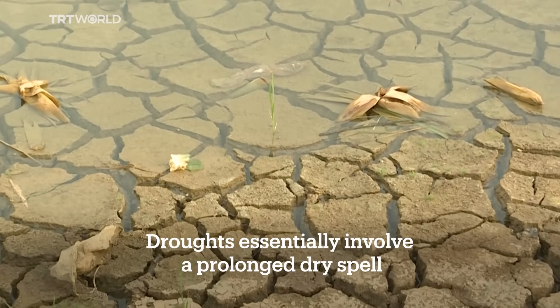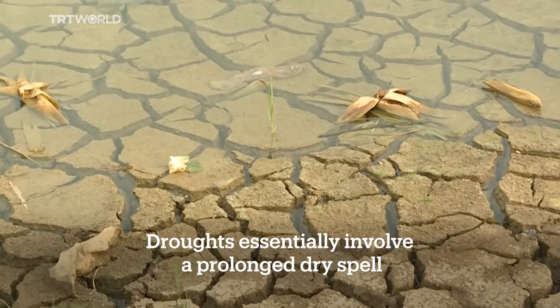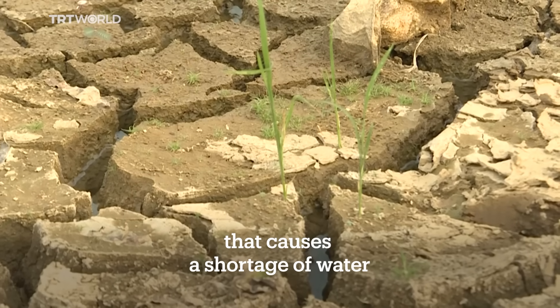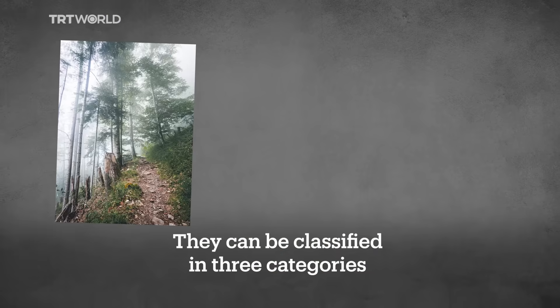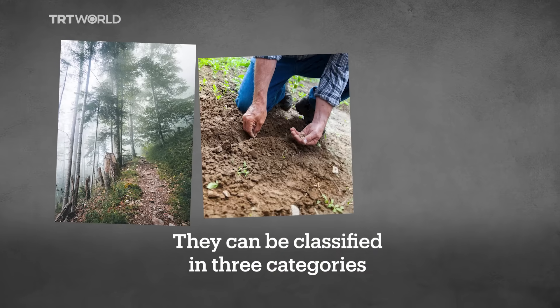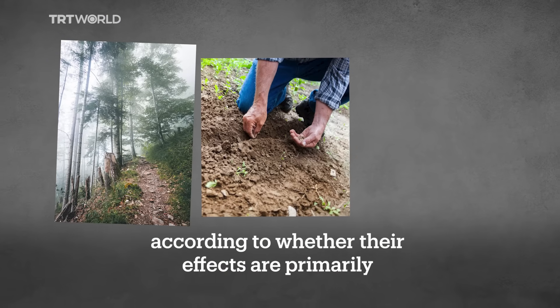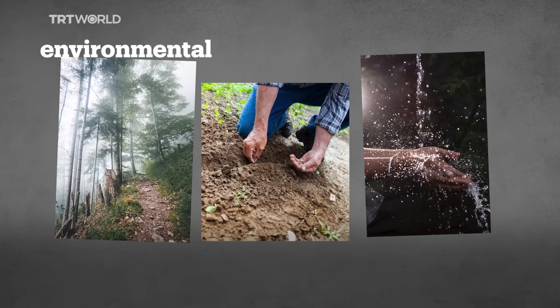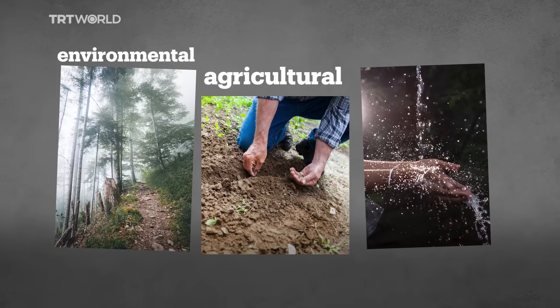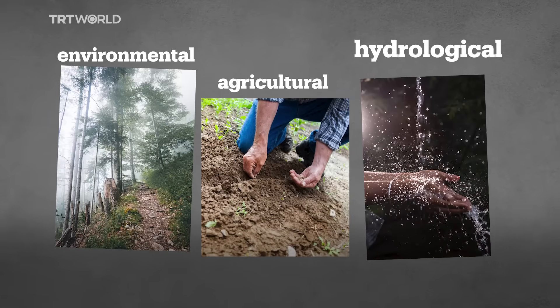Droughts essentially involve a prolonged dry spell that causes a shortage of water. They can be classified in three categories according to whether their effects are primarily environmental, agricultural, or hydrological.